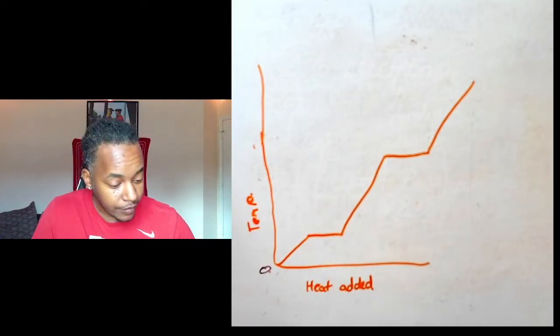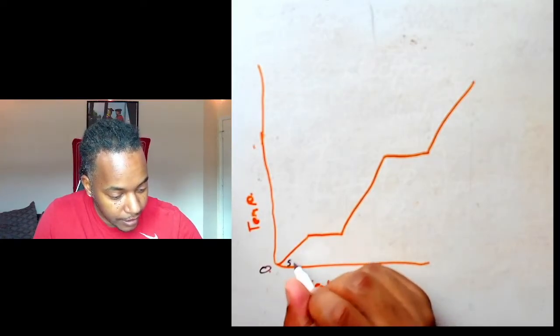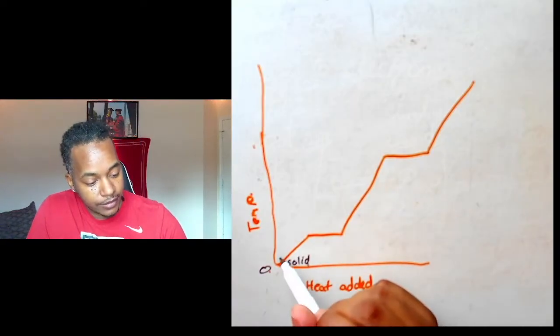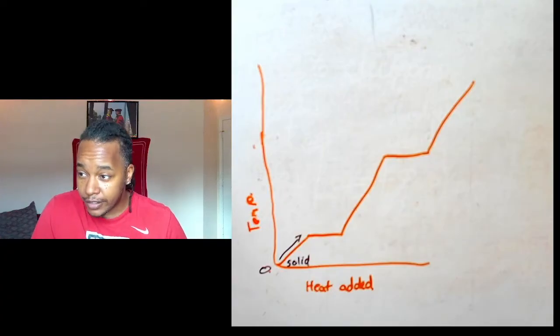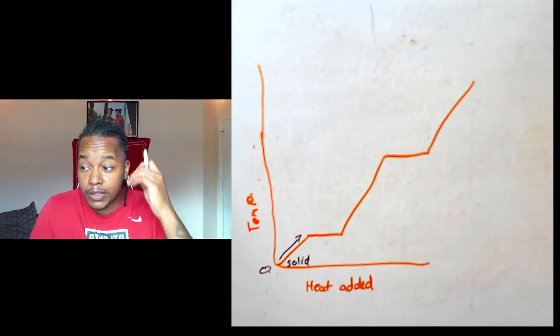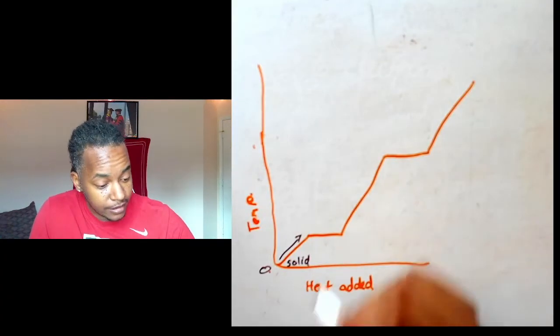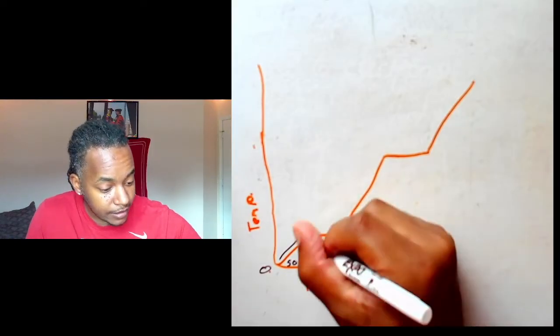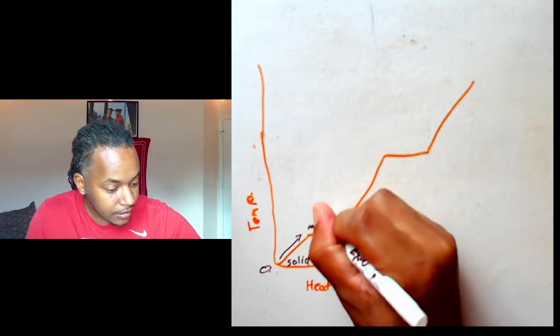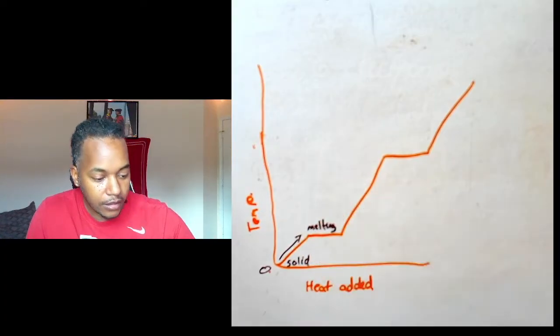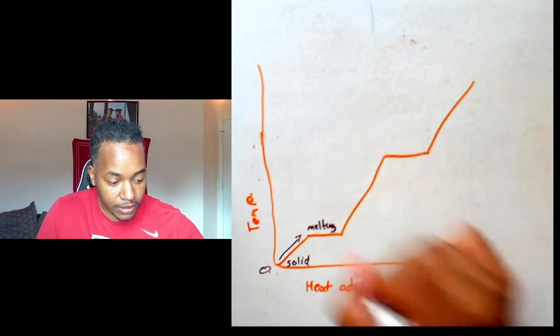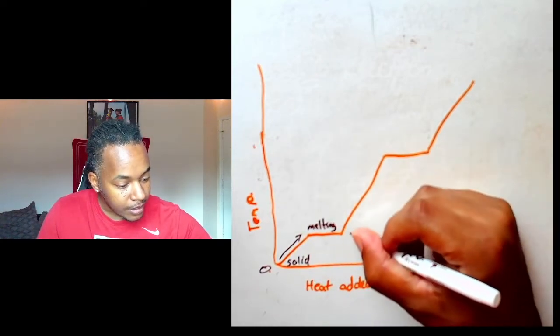So this is a solid right here, and as the temperature increases it starts to get hotter and hotter to the point at which it has a phase change. So once it levels out, that means we're having a phase change, in which case the solid starts to melt—that's melting—and then it becomes a liquid.